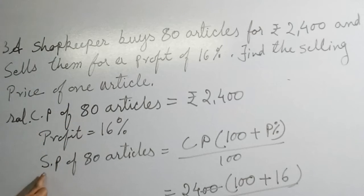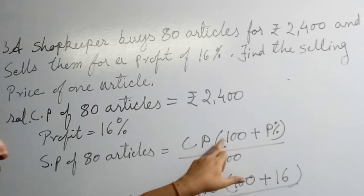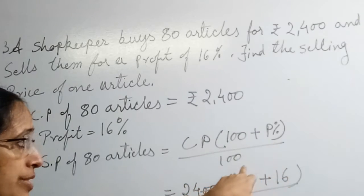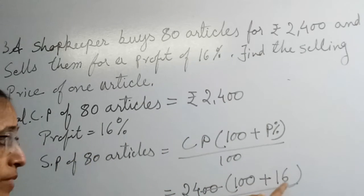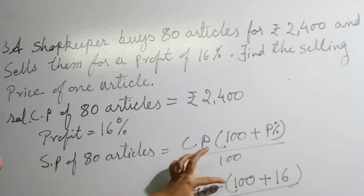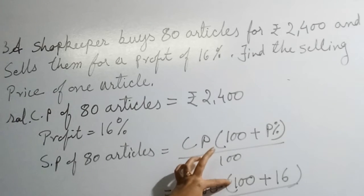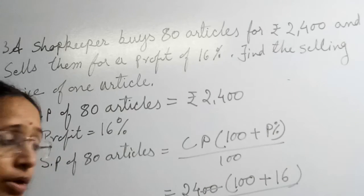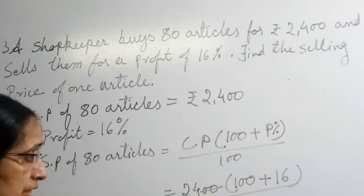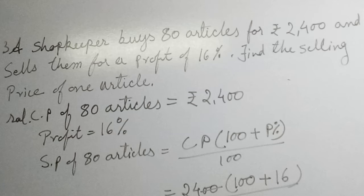So when we apply our formula, we get selling price of 80 articles equals CP bracket 100 plus profit percent upon 100. CP cost price 2400 bracket 100 plus 16 upon 100. These hundreds cancel because it is double zero - 100 plus 16 is 116, and we multiply 24.